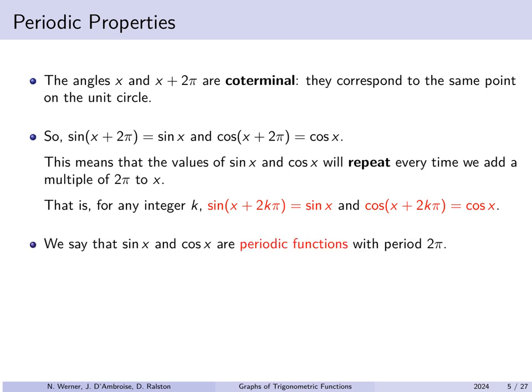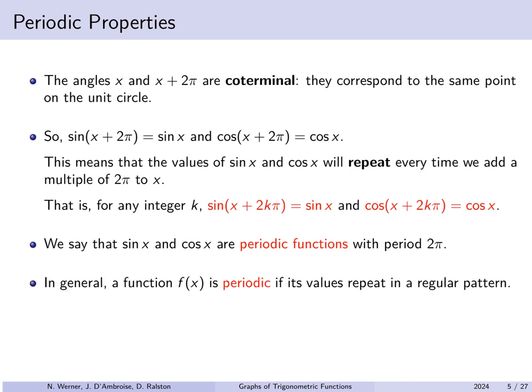We say that sine and cosine are periodic functions whose period is 2π. In general, when we refer to a function as periodic, we're saying that the values repeat themselves after a certain amount of time. That smallest number p — which when added to the input variable means you always get the same thing out — is called the period.